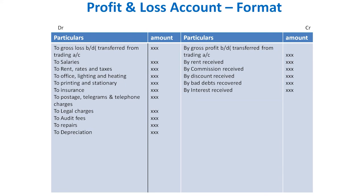Discount received from creditors is income. For example, if you are supposed to pay rupees 10,000 but the creditor gives a discount of rupees 2,000, your balance of 8,000 is payable — the 2,000 discount is income. Next is bad debts recovered: if there were bad debts of rupees 5,000 in the previous year, and in the current year the debtor pays rupees 1,000, that 1,000 acts as income on the credit side.